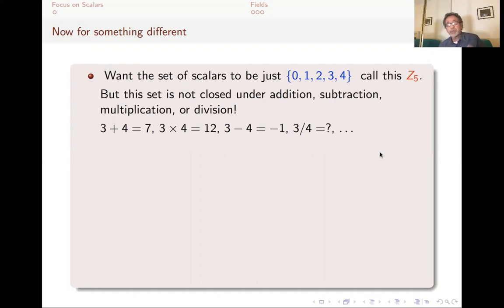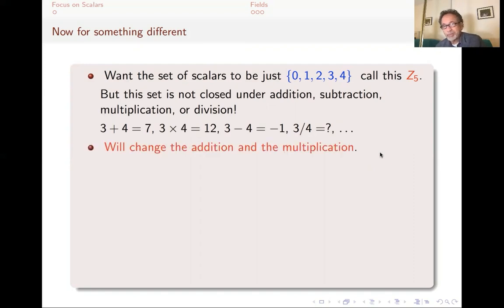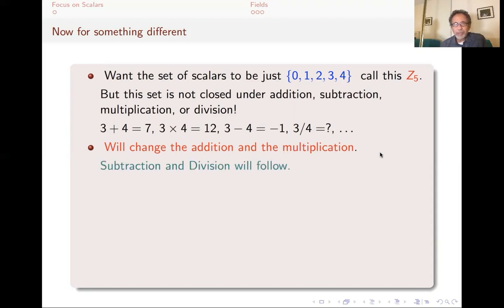A field is a place where you can add, multiply, subtract, and divide by non-zero numbers. We have been looking at fields of numbers, which are subsets of the complexes. This one is not a field of numbers. In any case, this seems like a dead end. But what I'm going to do is change the addition and multiplication on this set of scalars. How are we going to do that? Subtraction and division will follow from addition and multiplication — if I know what addition and multiplication are, that gives me a gateway to deciding what subtraction and division will be.